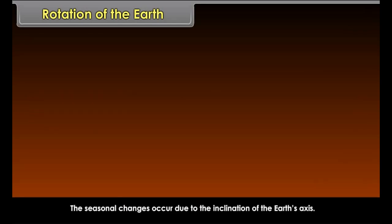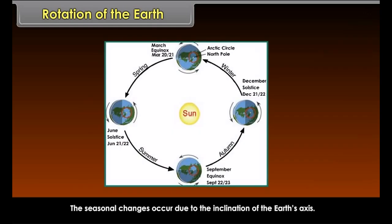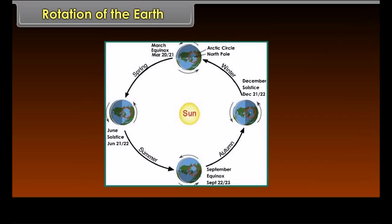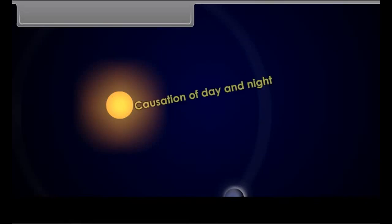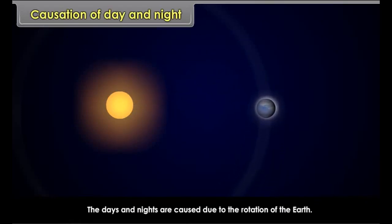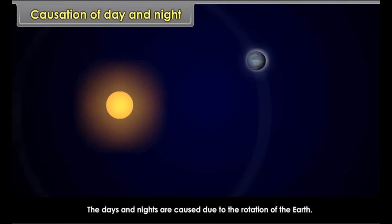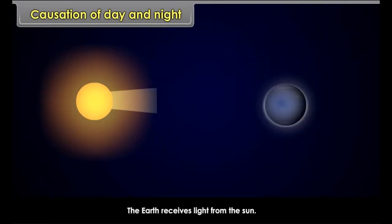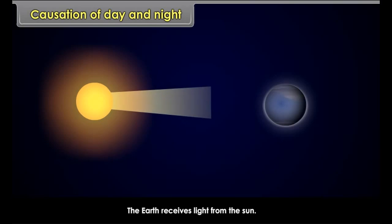The seasonal changes occur due to the inclination of the earth's axis. If the axis of the earth was vertical, then there would have been equal duration of day and night — that is, a 12-hour day and a 12-hour night.